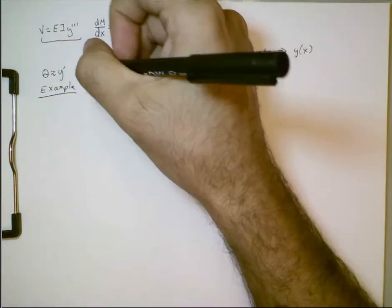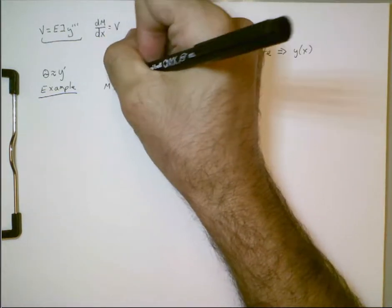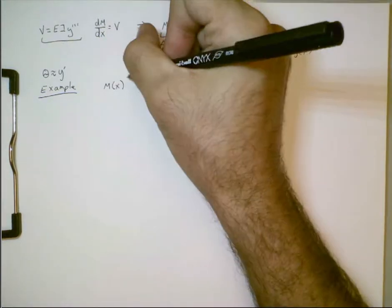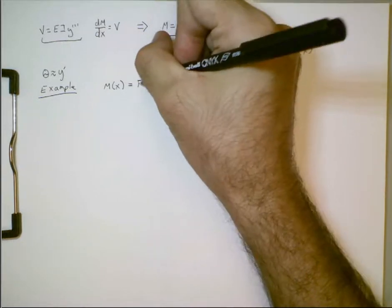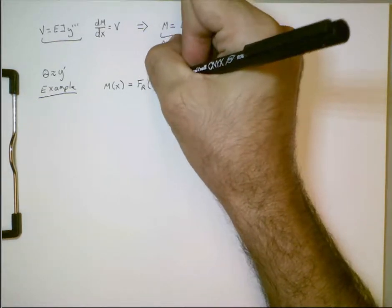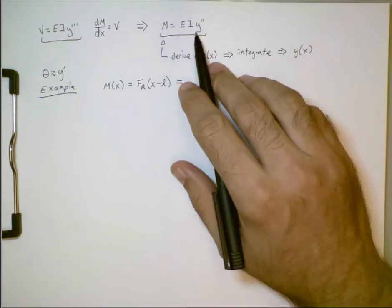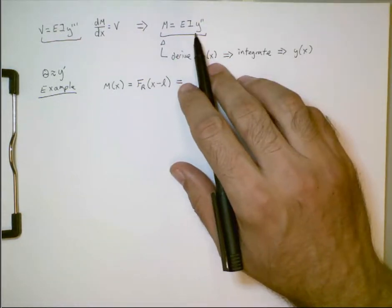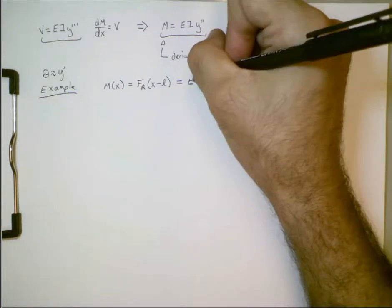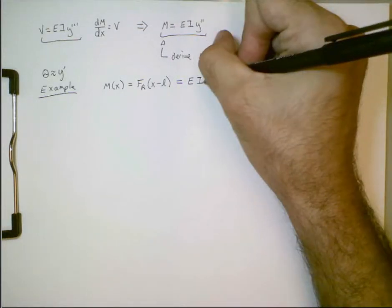So, now we know the moment of x. That's equal to the radial force times the quantity x minus l. And, based on this equation up here, we can also write that as being equal to e times i times y double prime.